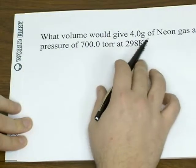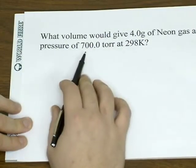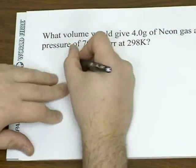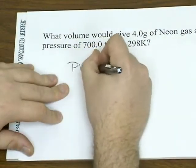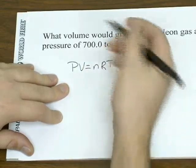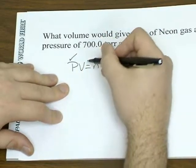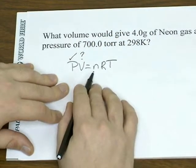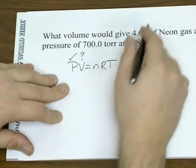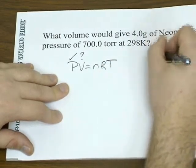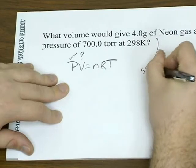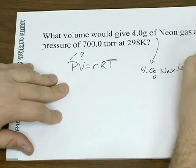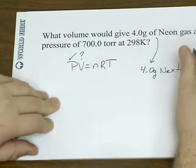What volume would give 4.0 grams of neon gas a pressure of 700 torr at 298 kelvin? Looking at the ideal gas law, we're given a pressure. Volume is what we're looking for. Remember N stands for moles. We're not given the number of moles, but we are given the mass of the neon, so you can convert grams to moles using neon's molar mass.